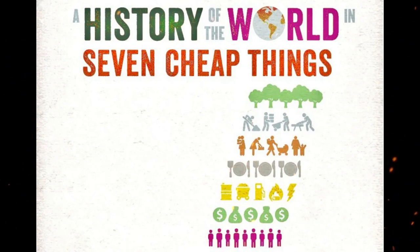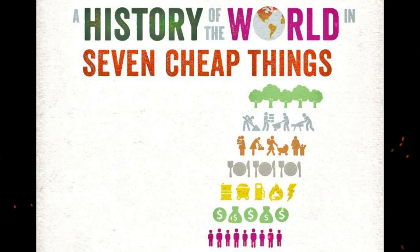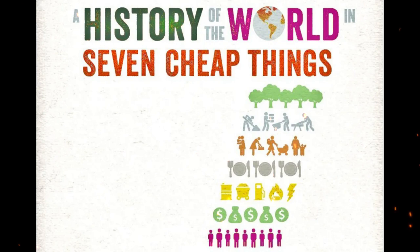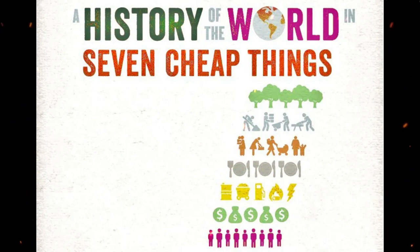The McNugget also illustrates another of the authors' central theses. They point out that long after humans have disappeared from the Earth, future inhabitants of our planet may examine the fossil record of our era and be astonished by the number of chicken bones it contains.